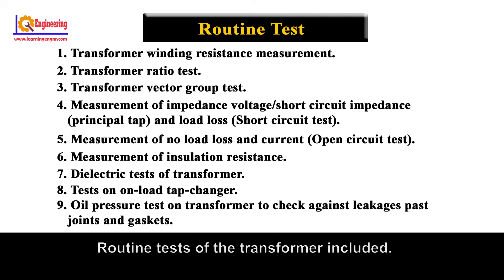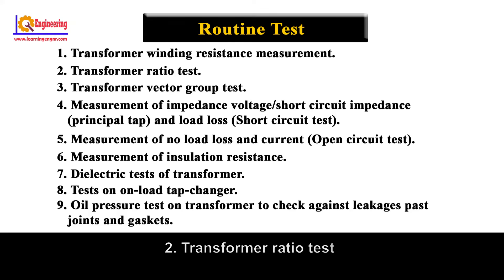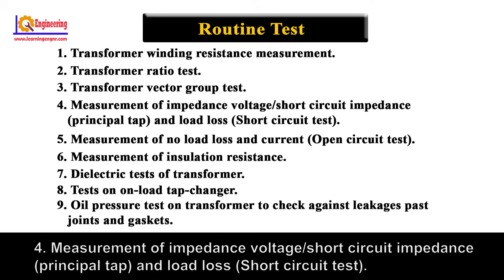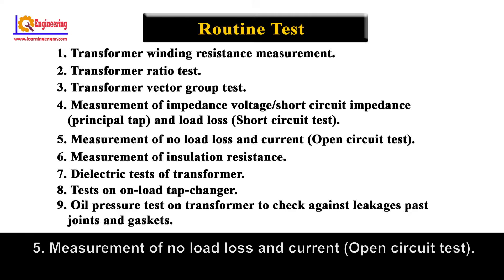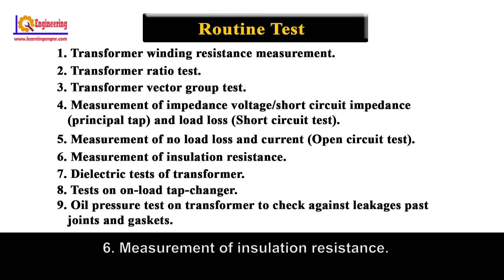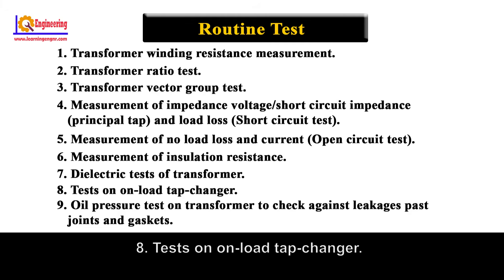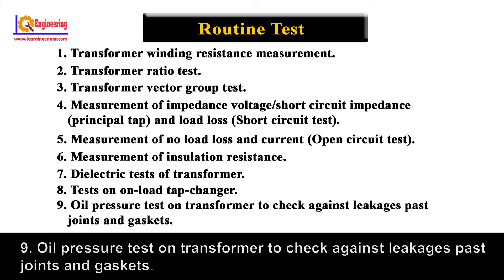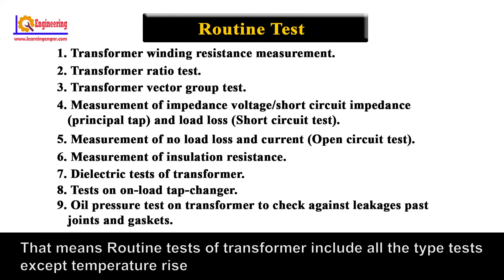Routine Test of the Transformer includes: Number 1, Transformer Winding Resistance Measurement; Number 2, Transformer Ratio Test; Number 3, Transformer Vector Group Test; Number 4, Measurement of Impedance Voltage or Short Circuit Impedance at Principal Tap and Load Loss (Short Circuit Test); Number 5, Measurement of No Load Loss and Current (Open Circuit Test); Number 6, Measurement of Insulation Resistance; Number 7, Dielectric Test of Transformer; Number 8, Test on Load Tap Changer; Number 9, Oil Pressure Test on Transformer to check against leakages, faulty joints, and gas tags. That means Routine Test of Transformers includes all the type tests except temperature rise and vacuum tests.